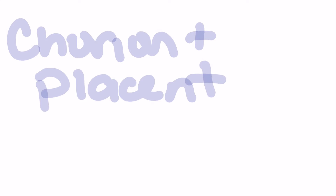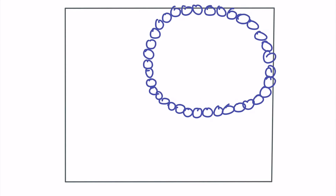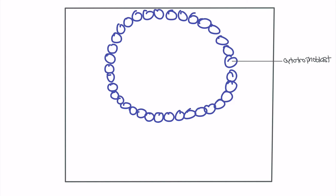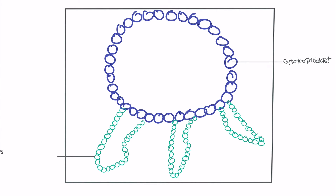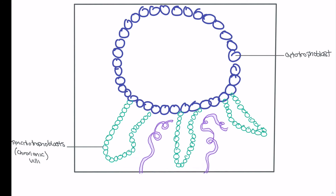Next we'll discuss actual chorion development, breaking down the process in more detail. Shown here is a blown-up picture of an implanted blastocyst. The blue cells represent the ring of cytotrophoblasts surrounding the embryo. The next layer is the syncytiotrophoblasts — the differentiated trophoblastic cells forming the finger-like projections that extend into the decidua basalis. These projections are also referred to as the chorionic villi, since the chorion is defined by both the cytotrophoblasts and syncytiotrophoblasts together. As these chorionic villi form, they penetrate the decidua basalis where the spiral arteries are located.